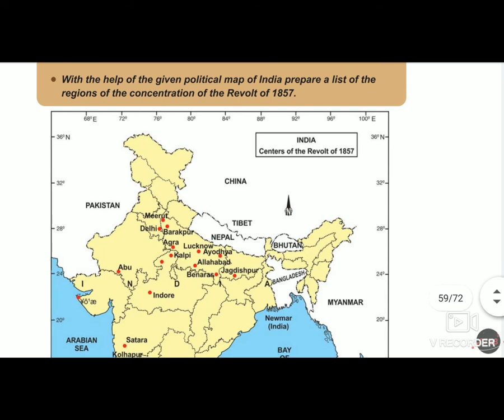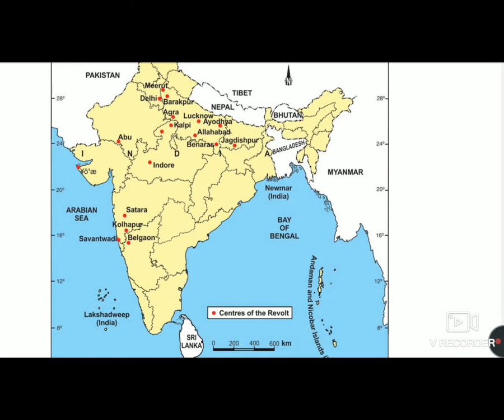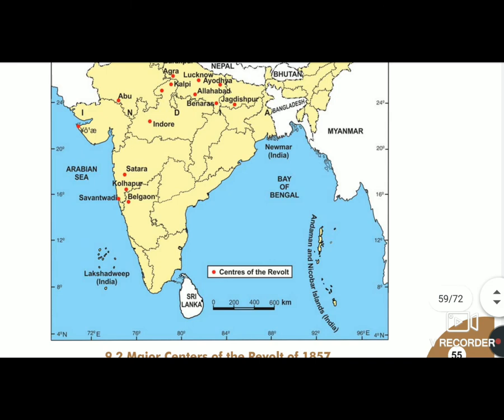Many freedom fighters worked for this cause. The major centres of the revolt, as seen on the map, included Meerut, Delhi, Barrackpore, Agra, Ayodhya, Kalpi, Allahabad, Banaras, Jagdishpur, Abu, Indore, Satara, Kolhapur, Belgaon, Santwadi, and others. These were the centres where planning and execution of the revolt took place.